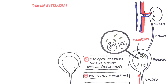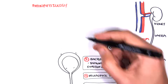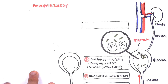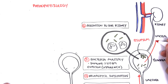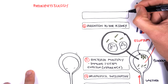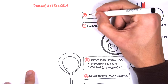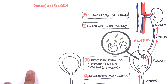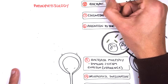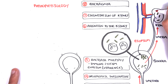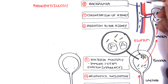If this urinary tract infection progresses and is left untreated, or if the patient is immunocompromised or has risk factors, the bacteria can ascend towards the kidneys and colonize them, causing an upper urinary tract infection. From here, if left untreated, the bacteria can spread into circulation via the renal veins, causing worst-case septic shock.